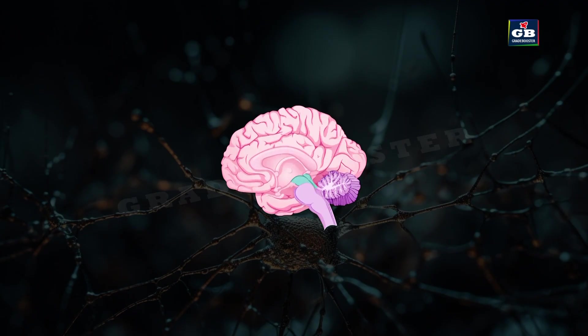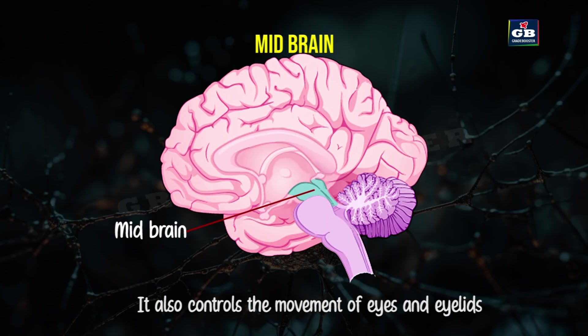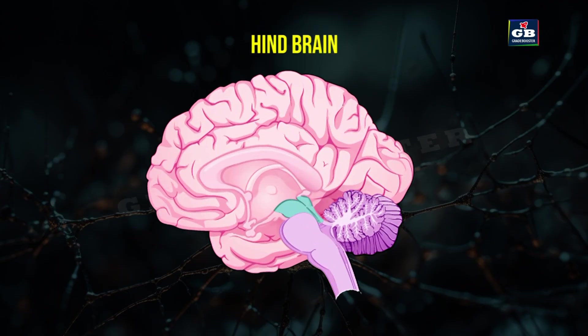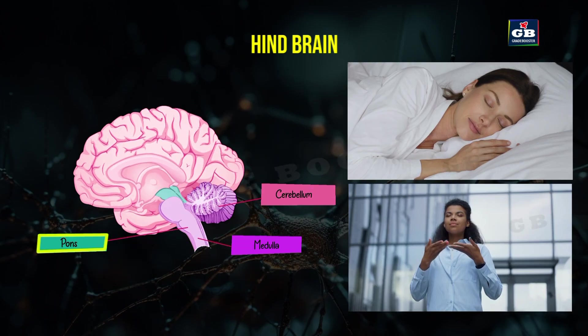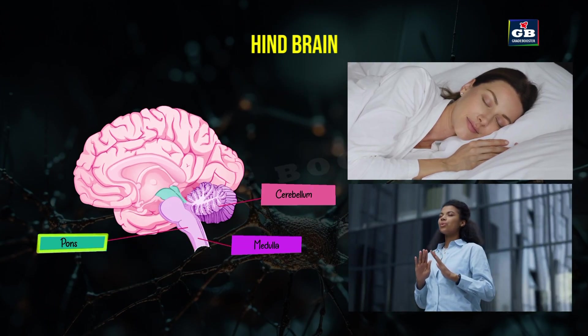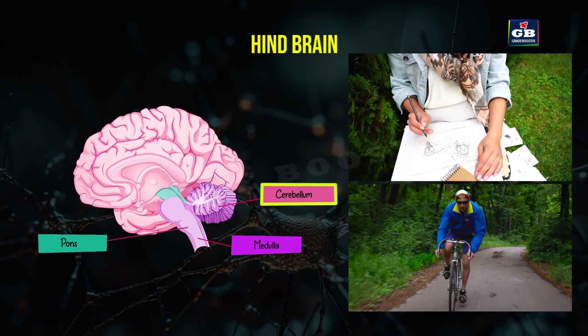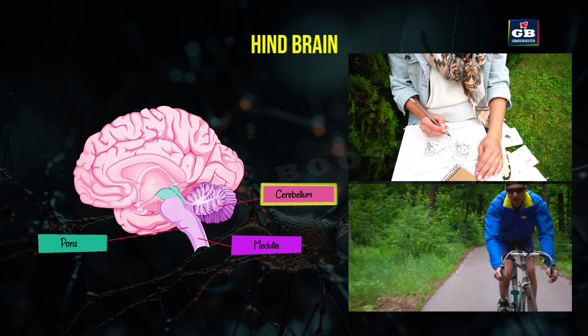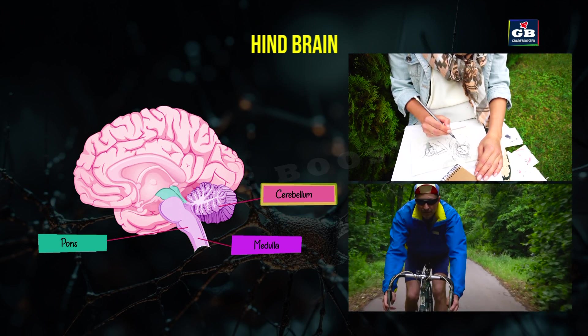The midbrain controls reflexes of the eyes and ears, and controls movements of eyes and eyelids. The hindbrain has three parts: pons, medulla and cerebellum. Pons controls sleeping and breathing. Medulla controls heartbeat, breathing and blood pressure. Cerebellum controls balance and coordination, like walking, cycling and drawing.